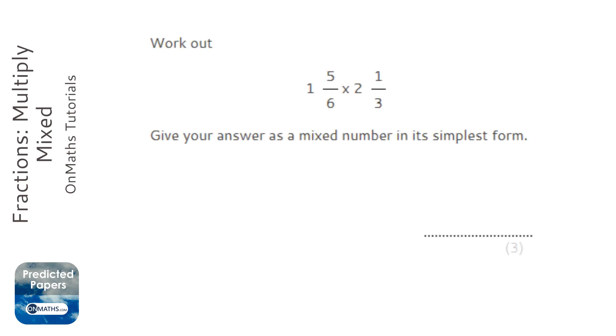Whenever we times, divide, add, or subtract mixed numbers, we always make them top heavy. So we times the big number by the bottom and add to the top on both these fractions. So 1 times 6 is 6, add to the top is going to be 11, and then keep the bottom the same.